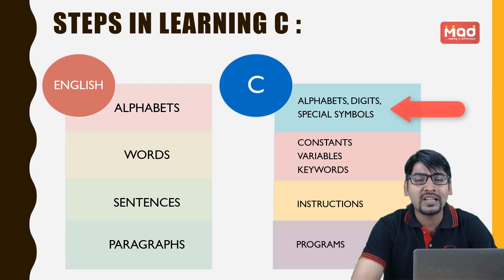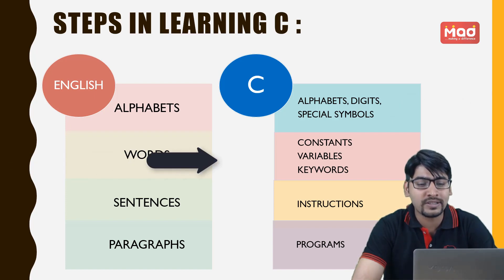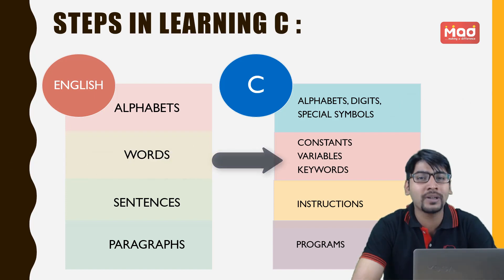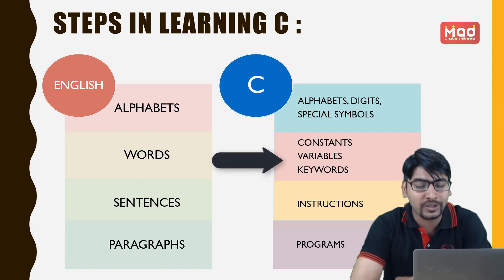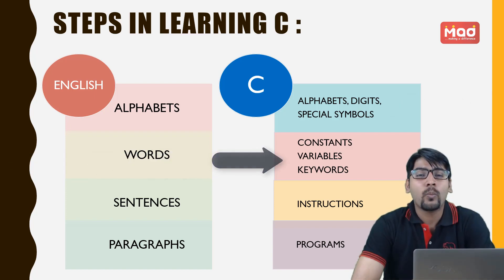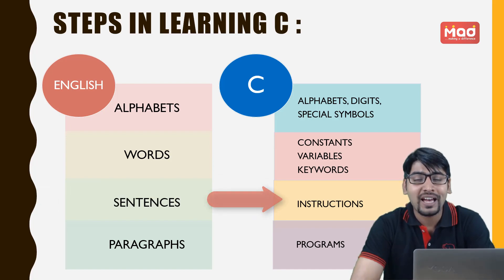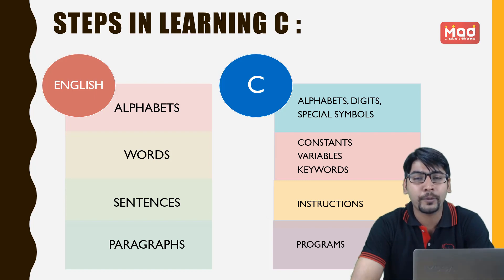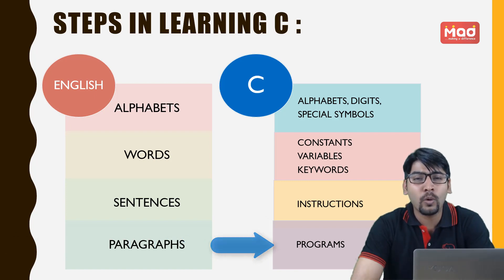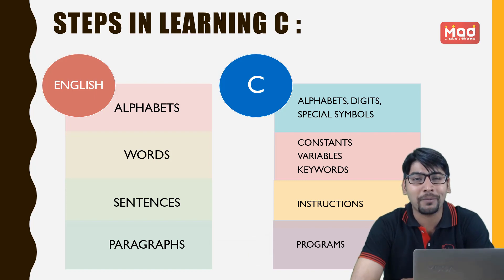When these combine together, it forms constants, variables and keywords. When these are combined together, it forms instructions. And a group of instructions makes a program. So I hope you understand the basic steps involved in making a C program.